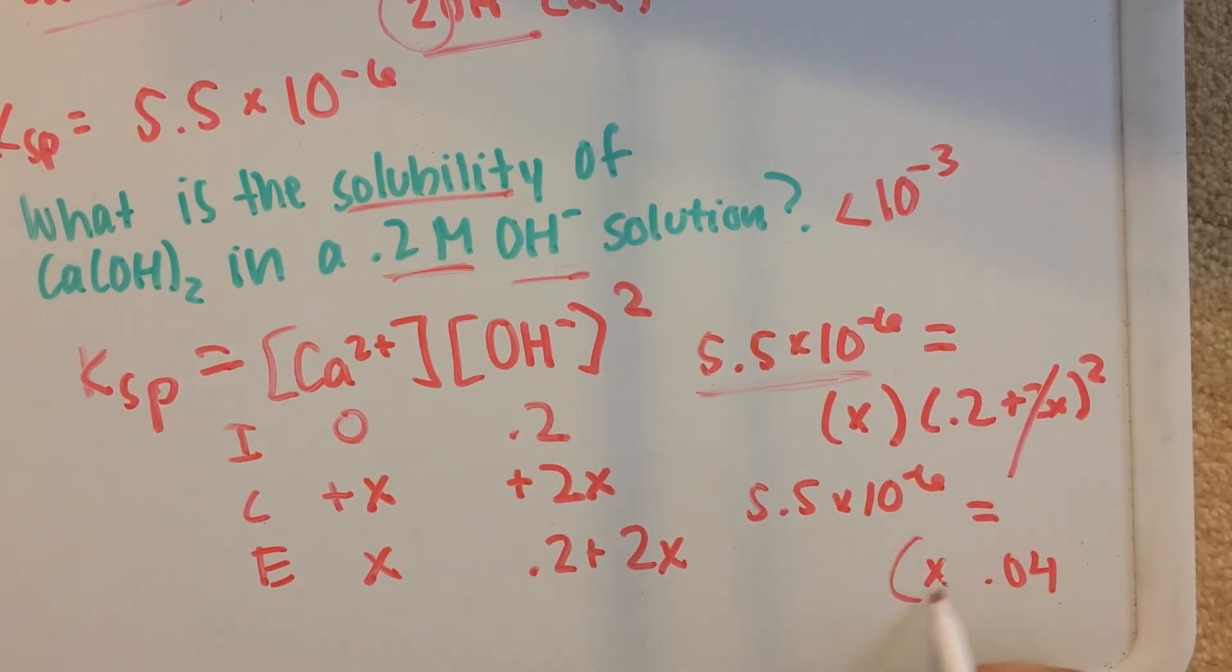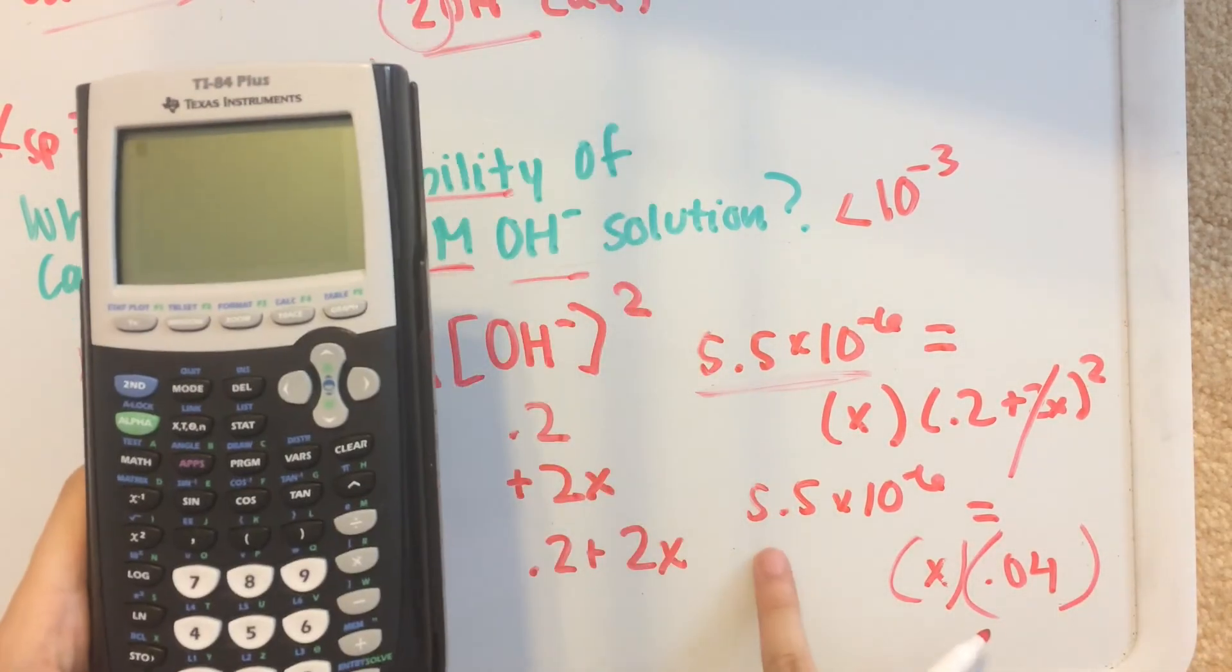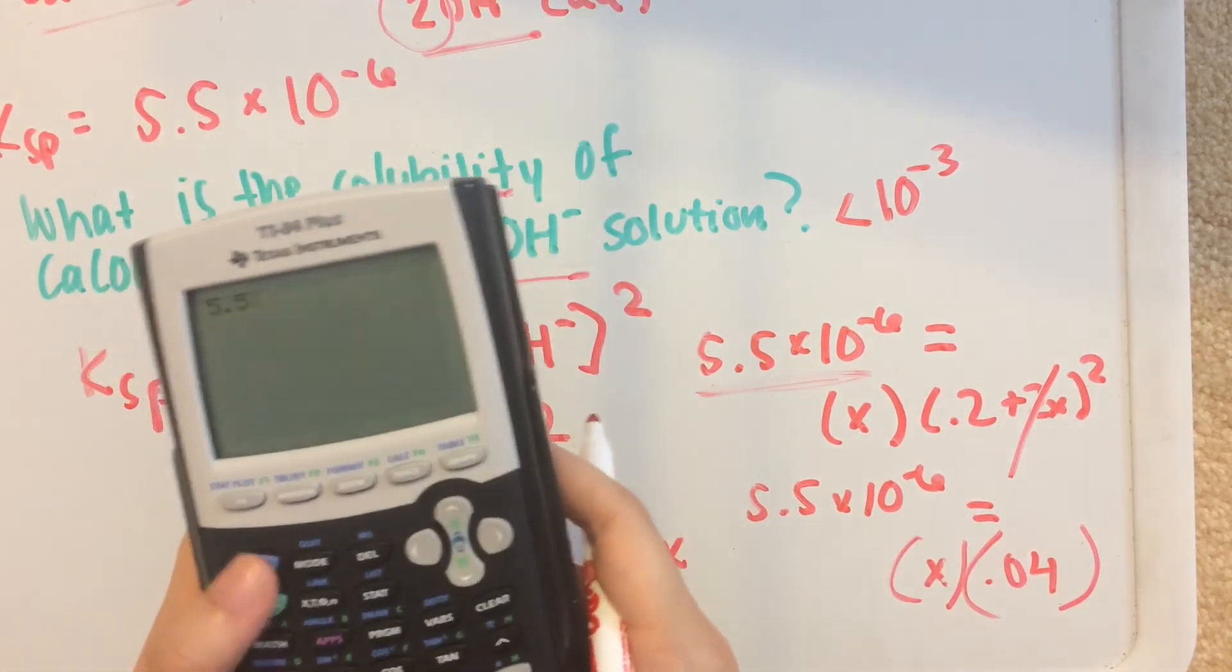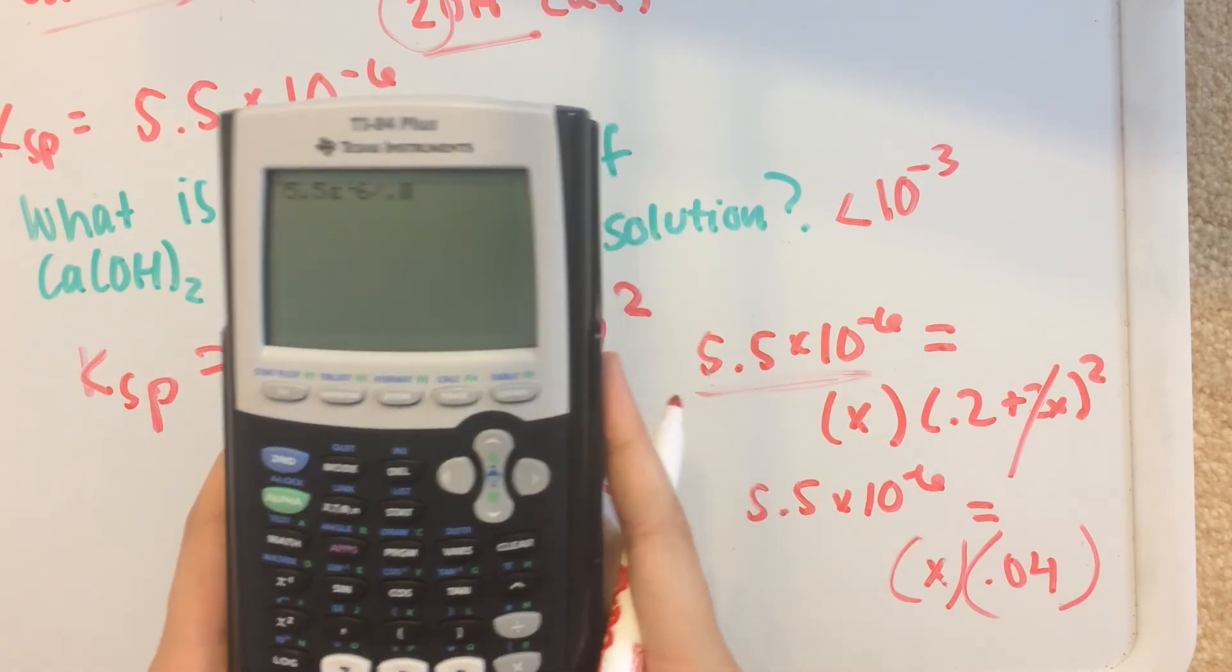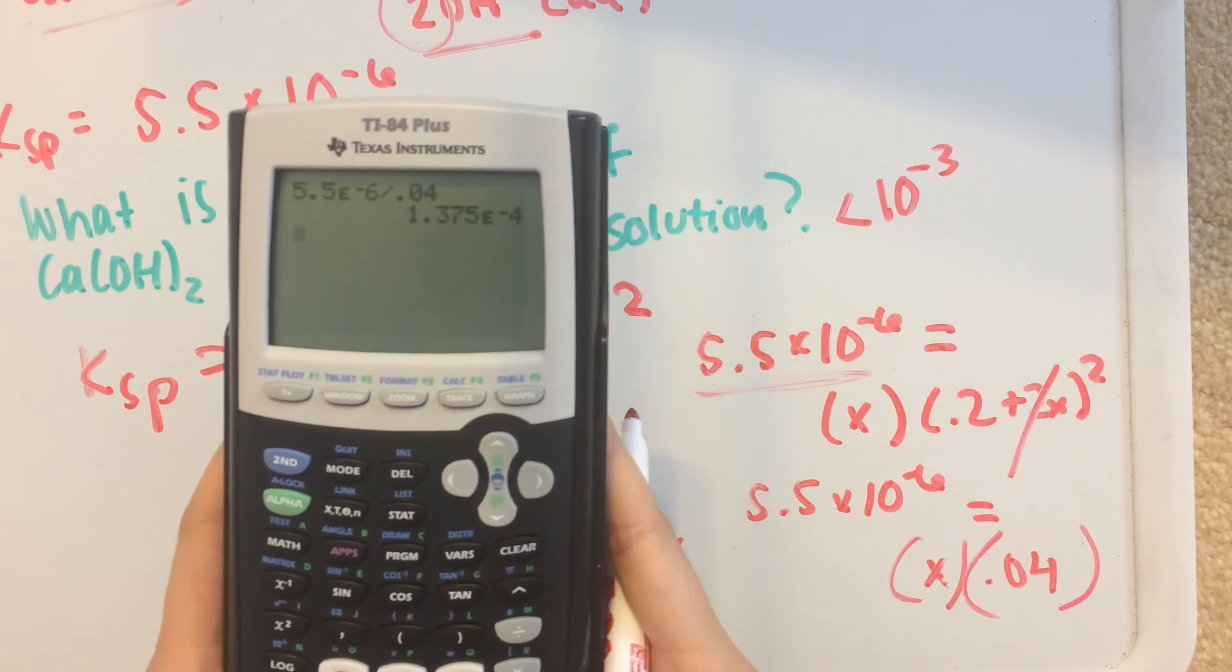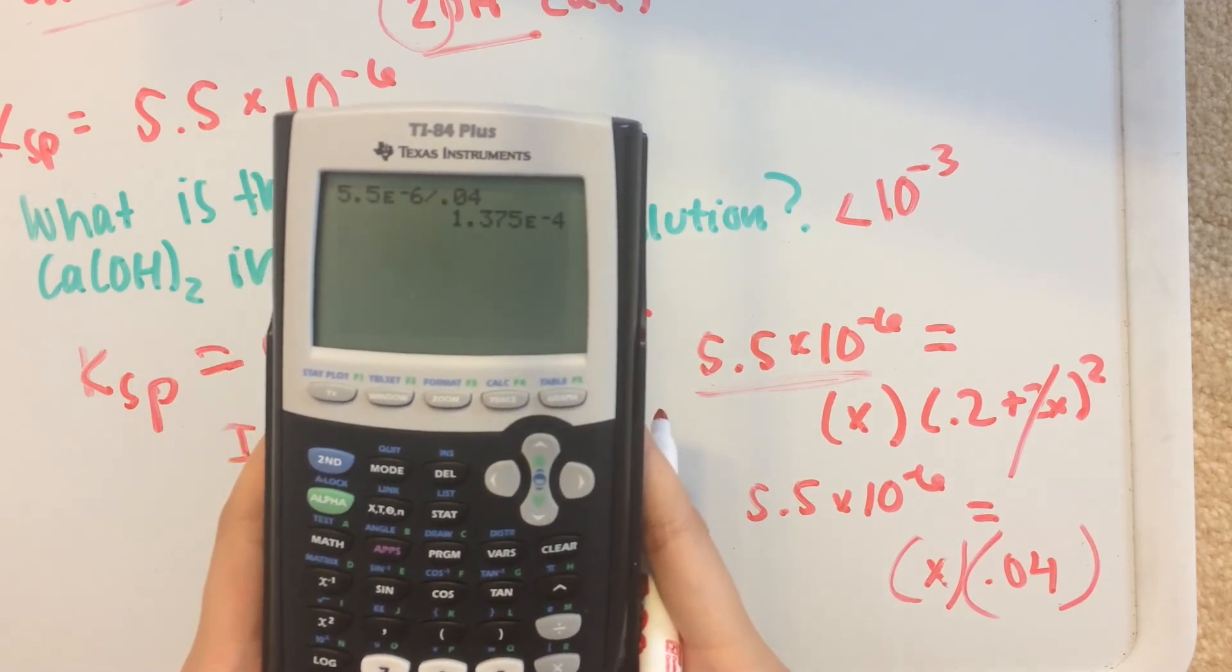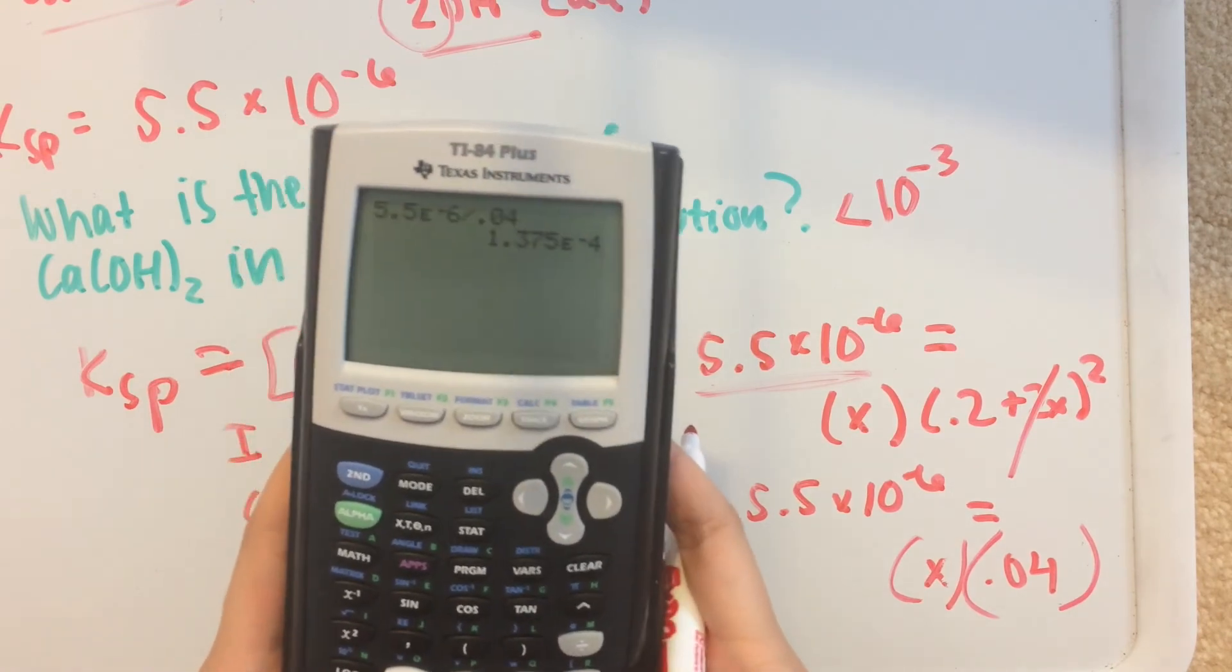So we can divide 5.5 times 10⁻⁶ divided by 0.04, which gives us 1.375 times 10⁻⁴.